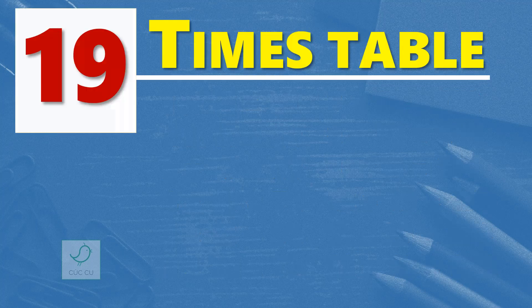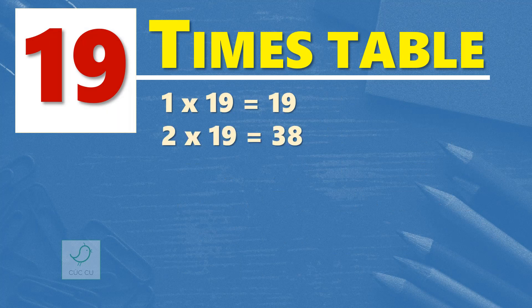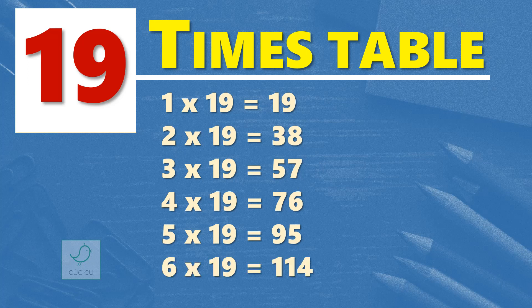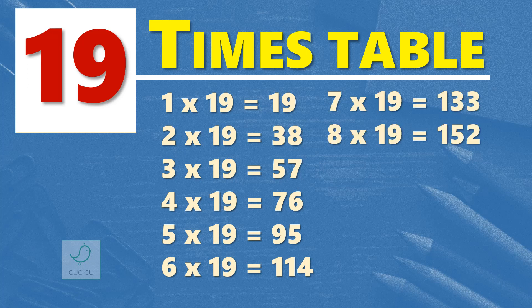19 times table. One time 19 is 19. Two times 19 are 38. Three times 19 are 57. Four times 19 are 76. Five times 19 are 95. Six times 19 are 114. Seven times 19 are 133. Eight times 19 are 152.